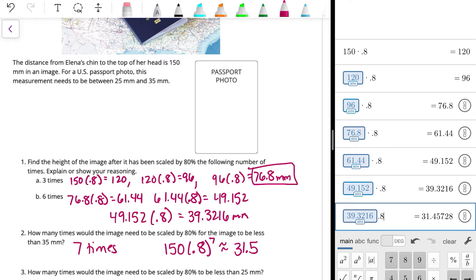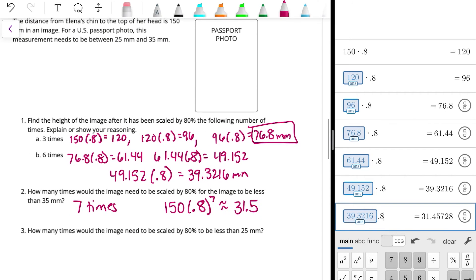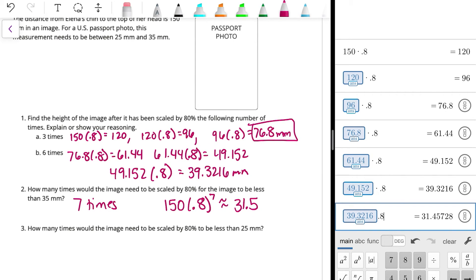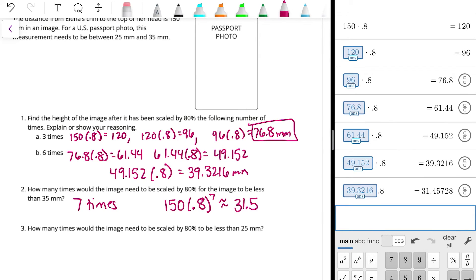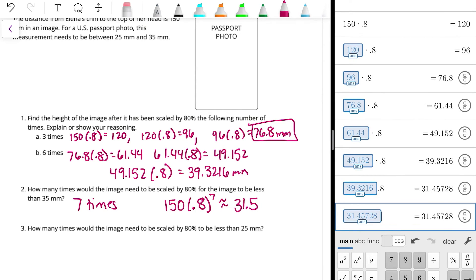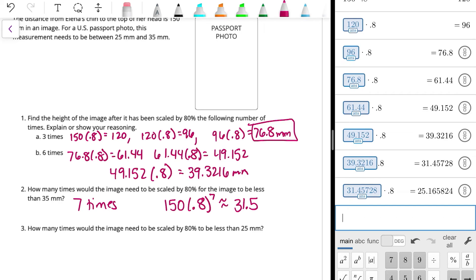So for number three, how many times would the image need to be scaled by 80% to be less than 25 millimeters? So we could continue with our pattern. And if we go over here to the calculator, that was our seventh. So let's try an eighth time. So we're going to multiply that by 0.8. And that's 25.165 or approximately 25.2. So if we say 150 times 0.8 to the eighth is approximately 25.2. We want it to be less than 25 millimeters.